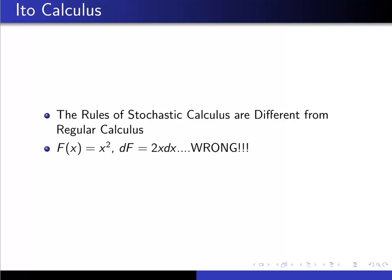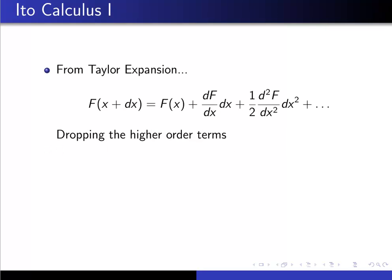Remember from Taylor expansions we'd have F(x + dx) = F(x) + dF/dx dx + 1/2 d²F/dx² dx² and so on. And then we'd typically drop the higher order terms, basically keeping the F(x) and the dF/dx dx, the first two terms.